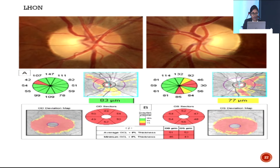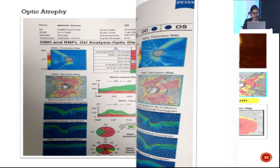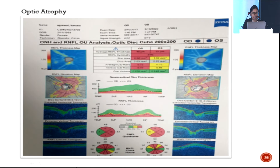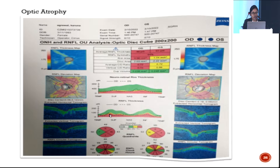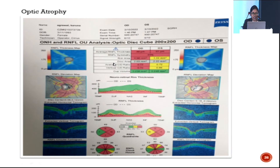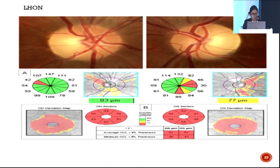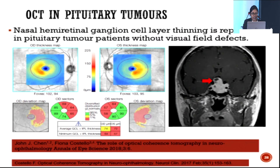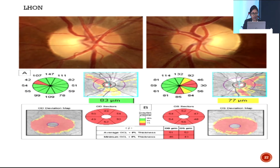In optic atrophy, OCT helps quantify the degree of damage. RNFL thickness decreased to 48 and 51 micrometers, below which OCT is of no value in advanced cases. Similarly, ganglion cell layer thickness also decreases below minimum values in such patients.